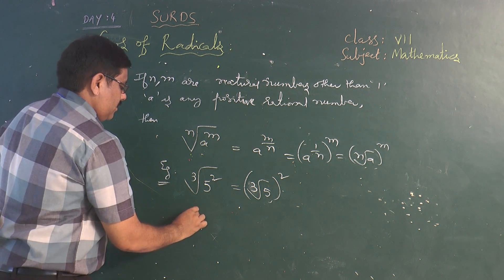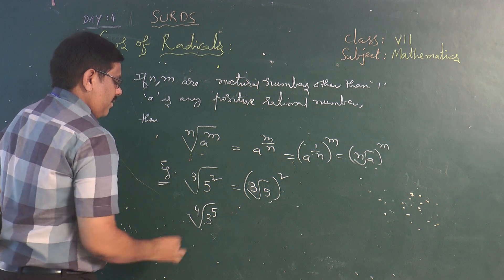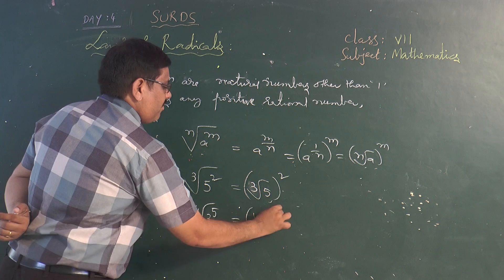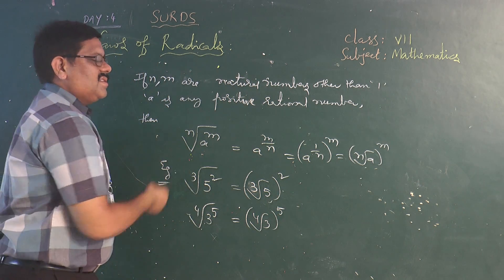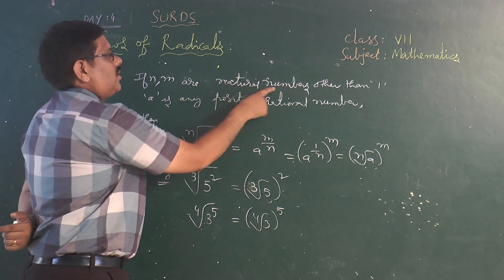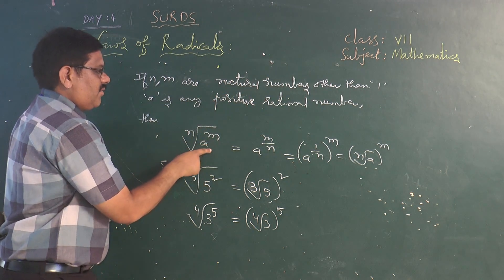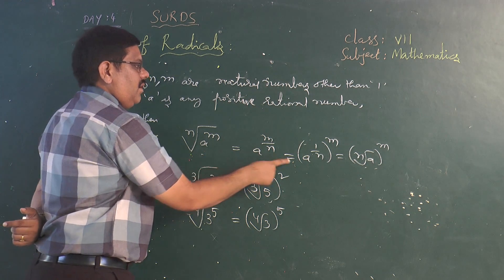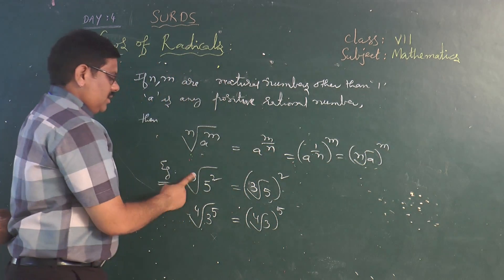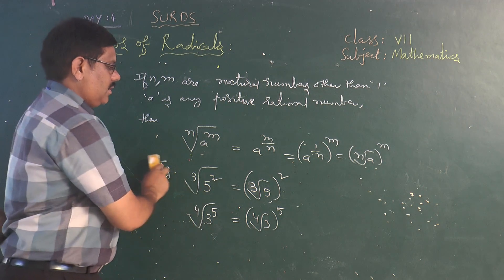For example, cube root of 5 squared equals (cube root of 5) whole squared, since n is 3. Similarly, 4th root of 3 to the power 5 can be written as (4th root of 3) to the power of 5. These examples illustrate that nth root of a^m equals (nth root of a)^m.